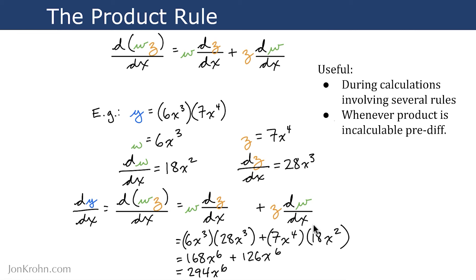Same thing over here. x to the power of 4 times x to the power of 2 is equal to x to the power of 4 plus 2. Same as x cubed times x cubed is equal to x to the power of 3 plus 3. So again, we end up with x to the power of 6 here. And 7 times 18 is 126.